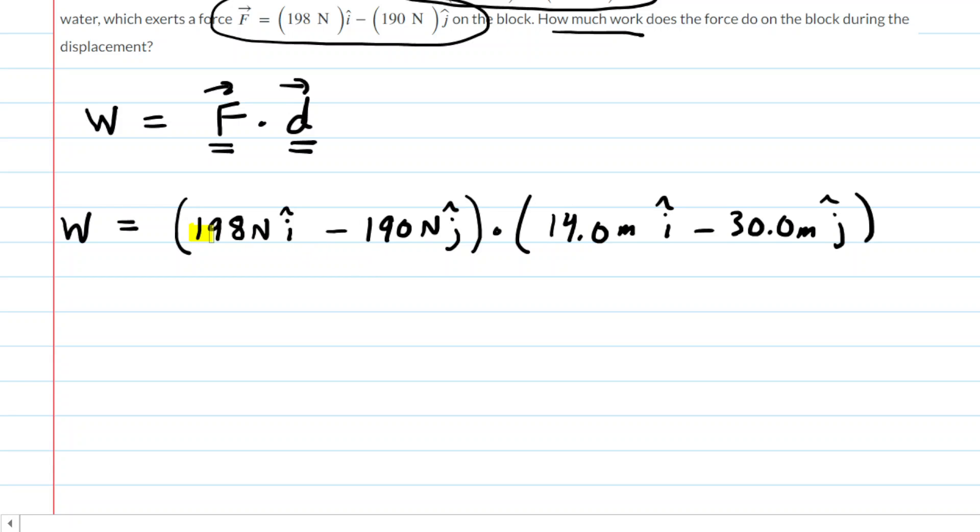It's relatively straightforward because all we need to do is take the x components of the two vectors and multiply them. And then we're going to do the same thing with the y components of the two vectors. We're going to multiply them as well. So let's go ahead and set up those multiplications.